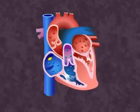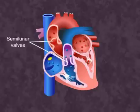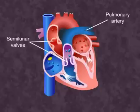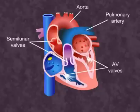This increased pressure opens the semilunar valves and blood flows into the pulmonary artery and the aorta. The closing of the AV valves produces the first heart sound, LUB.